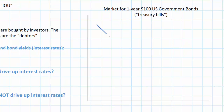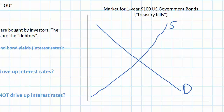The demand for US government bonds will be downward sloping, and the supply of US government bonds will be upward sloping. The price of a US government bond is therefore determined by the equilibrium between supply and demand. For the sake of our explanation, let's assume that the current equilibrium price of one-year $100 US government bonds is $95, and the equilibrium quantity we'll identify as QE.